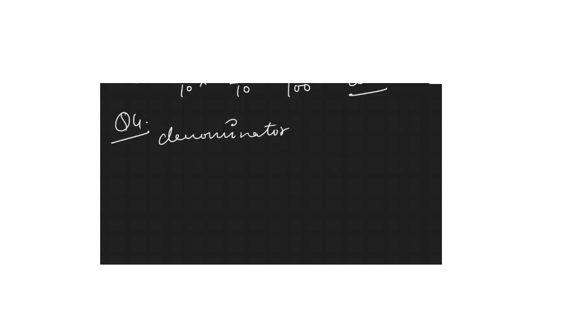Next we have question number 4. The questions are slightly different here — it says the denominator should be given. Question 4, part b: find an equivalent fraction of 7/10 where the denominator should be 20. You cross-check: 20 comes in the 10 times table. Yes, it comes on 2.